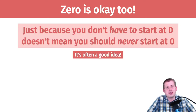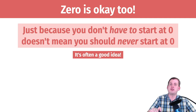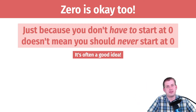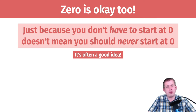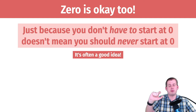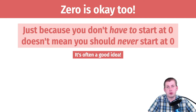Just because you don't have to start at zero doesn't mean you should never start at zero. It's often good to do it just to head off potential haters, especially if your scale goes from like five to a hundred. Just drop it down to zero — cutting off the last five numbers doesn't matter much visually, and people won't yell at you for starting at five instead of zero.